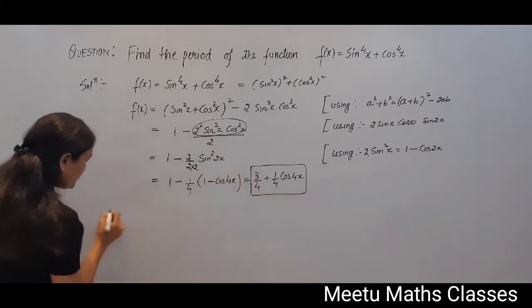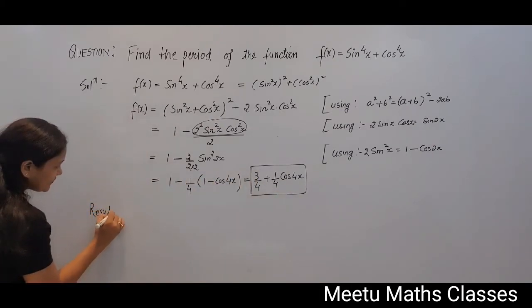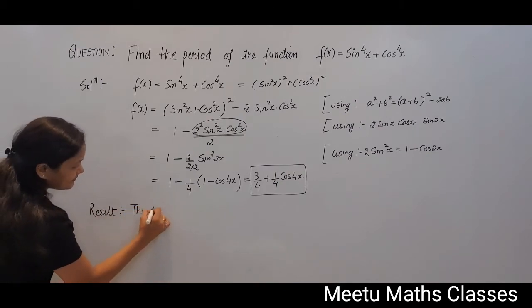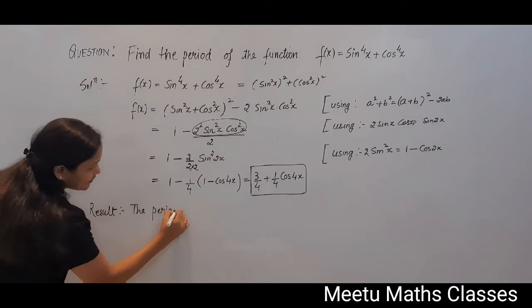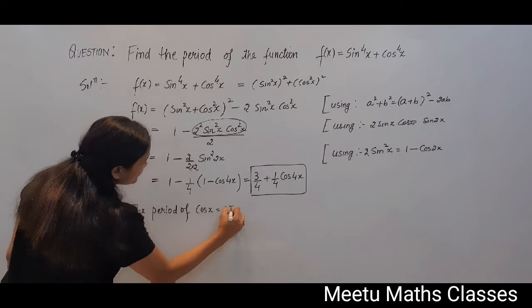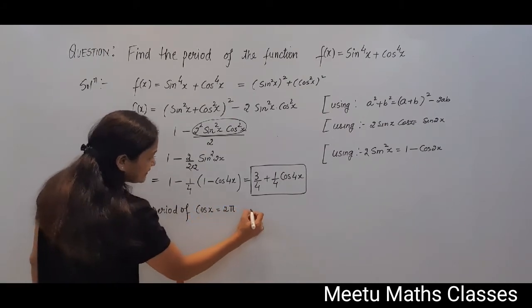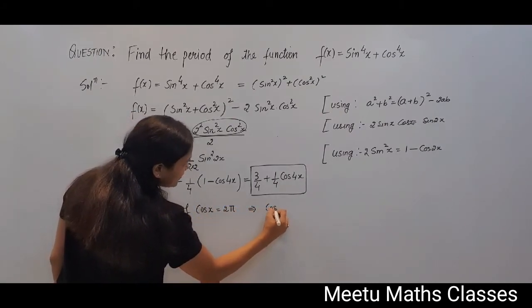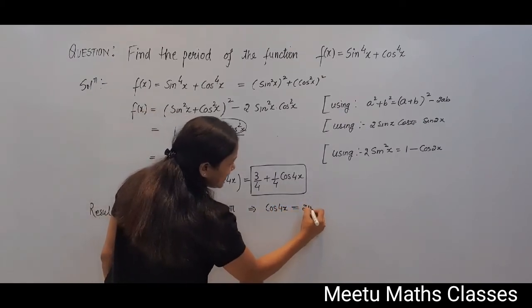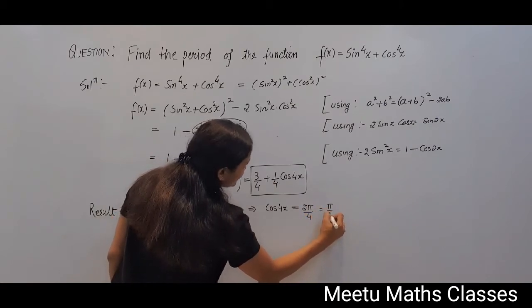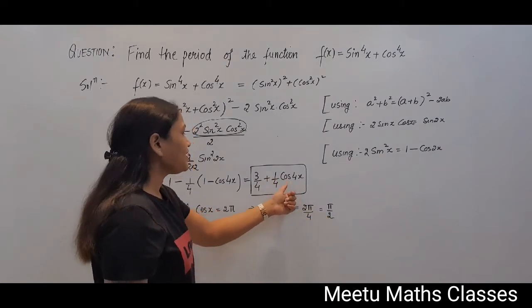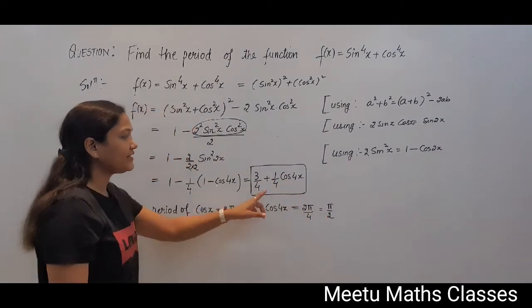Now we know that the period of cosx is 2π. Therefore, the period of cos4x will be 2π/4, which is π/2.